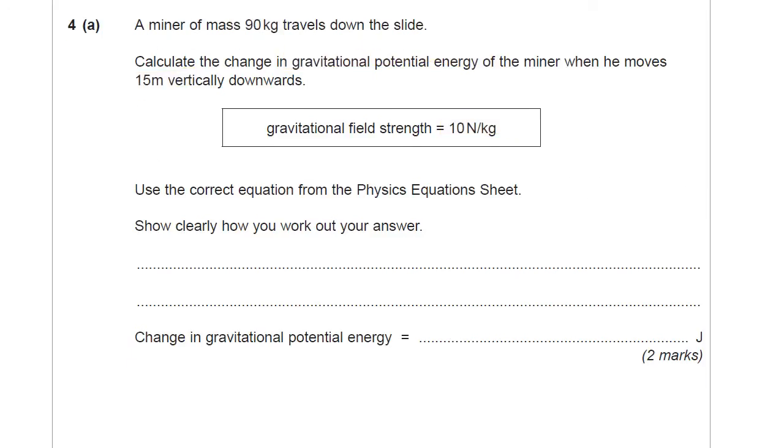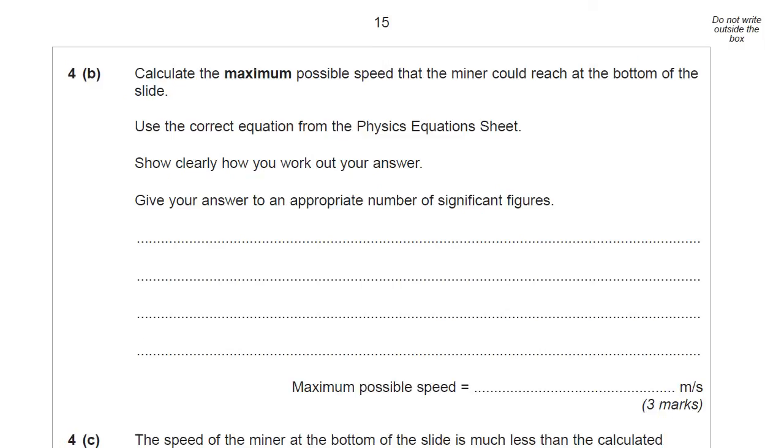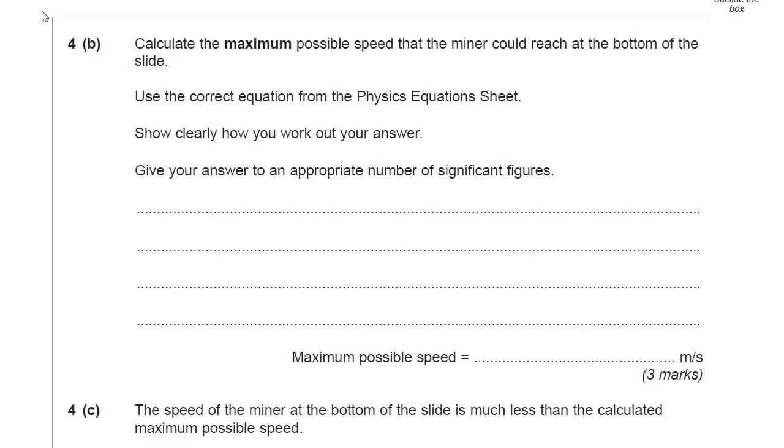Next section now. Calculate the maximum possible speed the miner could reach at the bottom of the slide. Use the correct equation from the physics equation sheet. Show clearly how you work out your answer. Give your answer to an appropriate number of significant figures. So that's where that third mark is coming from in this question here. Before I ask you to go to the equation sheet, I will tell you the principle that this question is based on, in case you've forgotten it.